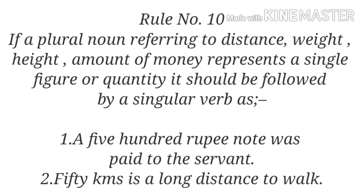Rule number ten: if a plural noun referring to distance, weight, height, or amount of money represents a single figure or quantity, it should be followed by a singular verb. Example: 'A 500-rupee note was paid to the servant.' Next example: '50 kilometers is a long distance to walk.' We use a singular verb with distance, period of time, sum of money, etc., when considered as a unit. So these are followed by singular verbs 'was' and 'is'.